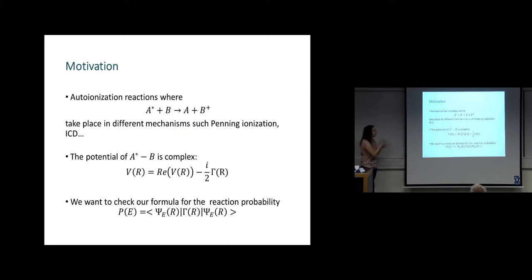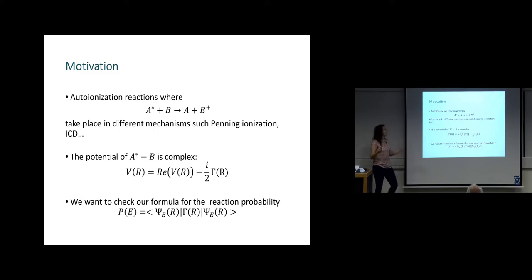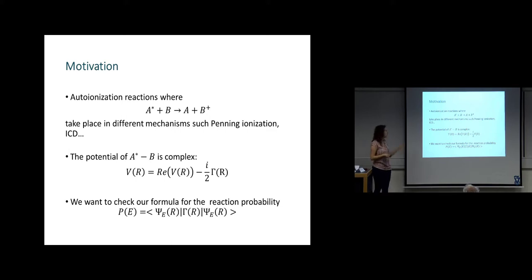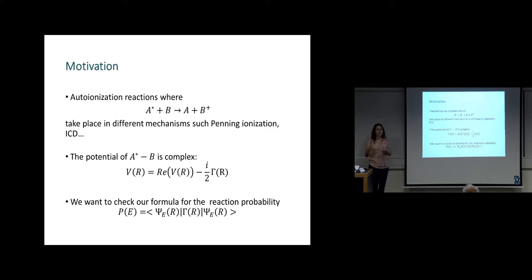Autoionization reaction: there is one particle A in an excited state, and it interacts or collides with another particle B, and they decay to A plus B-plus, a cation B. This autoionization reaction takes place by different mechanisms. The potential of A-excited-B is complex. In this project we have two aims: we want to check our formula. We take a model that we can solve analytically, and we can know the probability of the reaction, and compare our formula to the probability of the model.